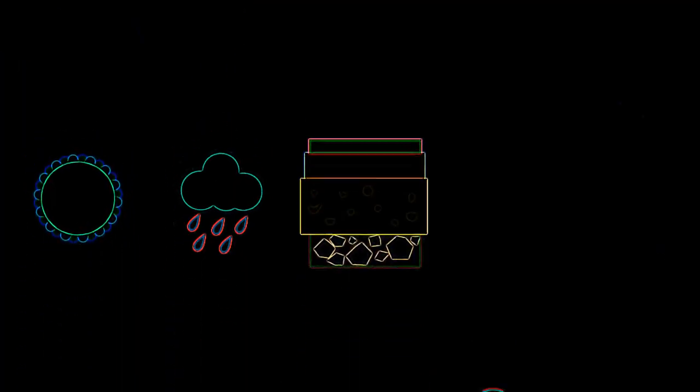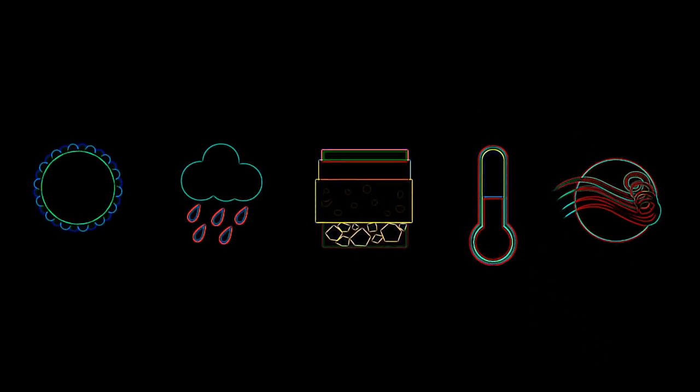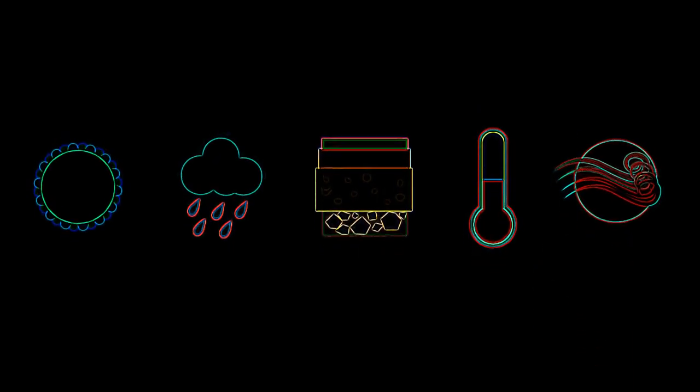Sunlight, precipitation, soil composition, temperature and air currents are all examples of abiotic components that can be found within an ecosystem.